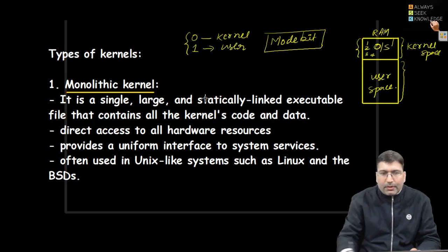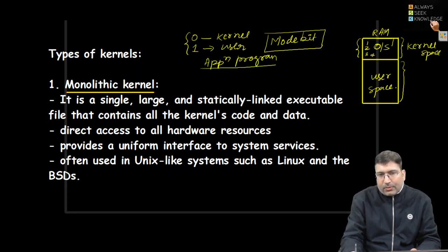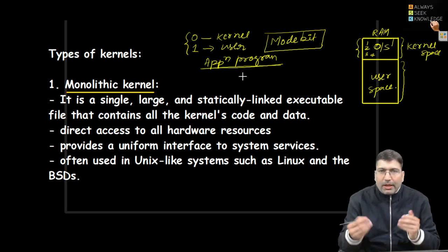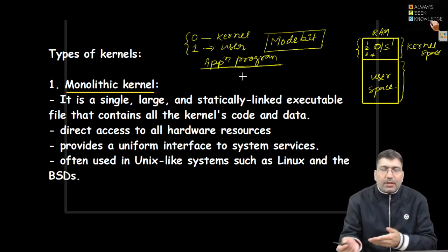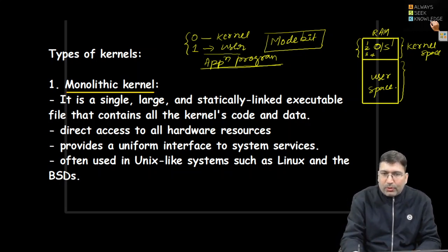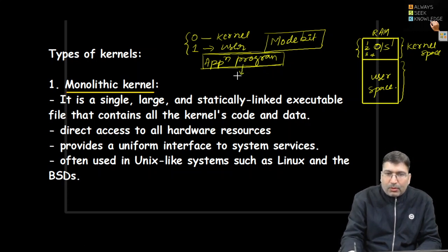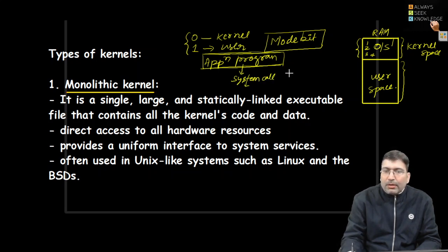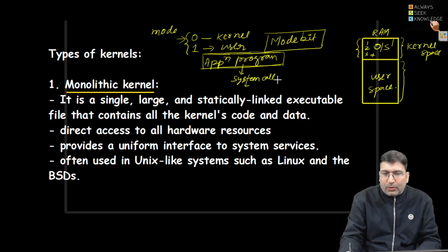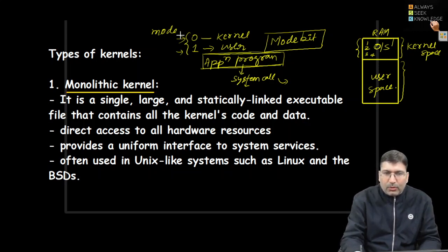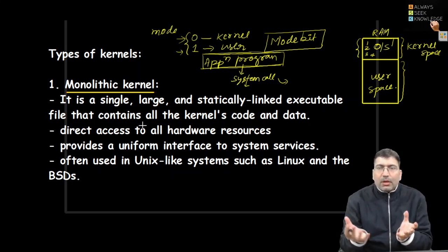An application program running in user space does not have the privilege to access memory directly, create files, or print something on screen. When an application program wants to do that — for example, create a file — it will call a system call. Once the system call is called, the mode bit is set to zero, and once the system call returns, the mode bit becomes one again. We will discuss the role of mode bit in further detail in later classes.